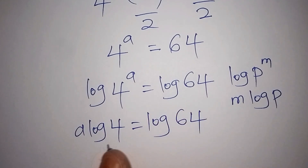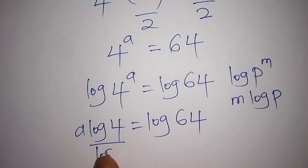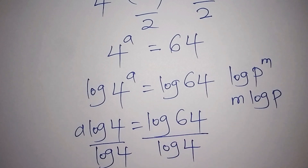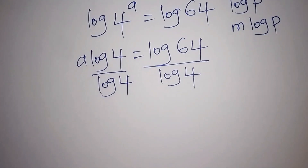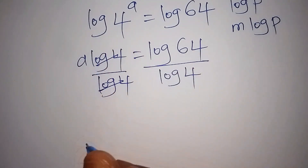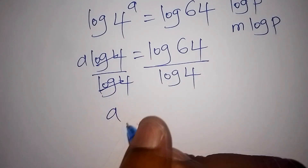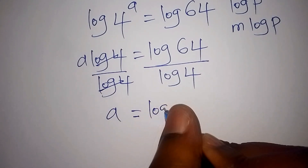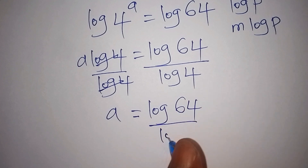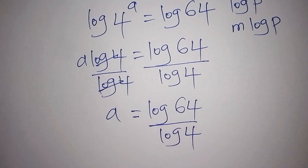To isolate a, we divide both sides by log of 4. The log of 4 on the left cancels, so our value for a equals log of 64 over log of 4. We don't leave our answer at this step — we simplify further.